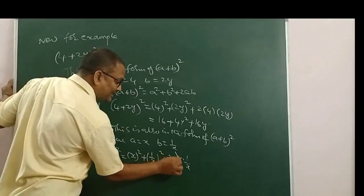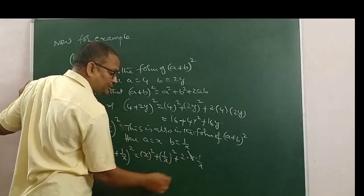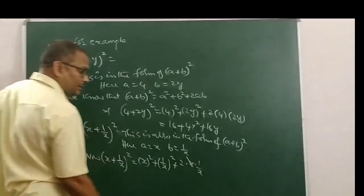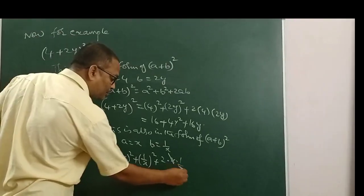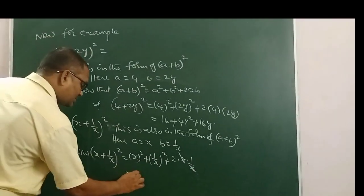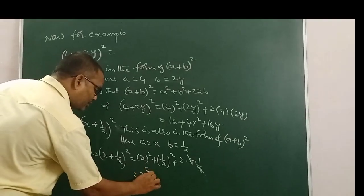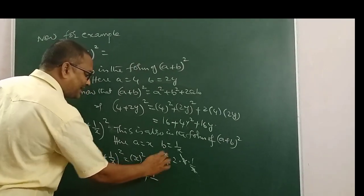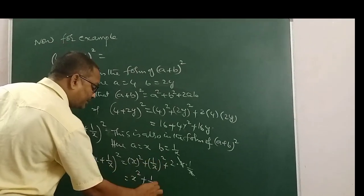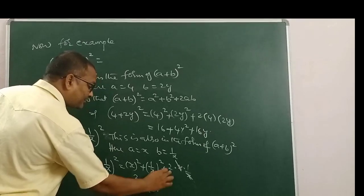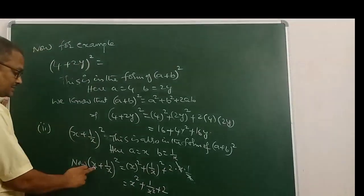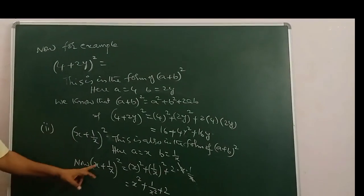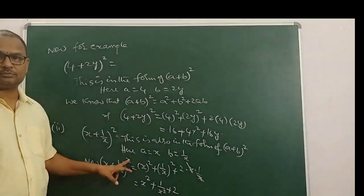Now, X in the numerator and X in the denominator cancel each other. That is equal to X square plus 1 by X square plus 2. This is the expansion of X plus 1 by X whole square.